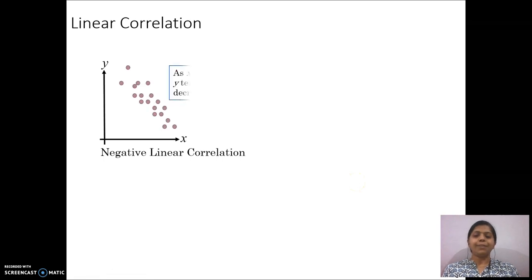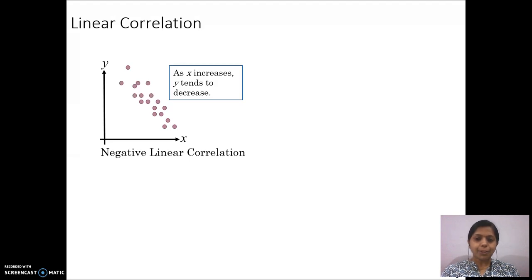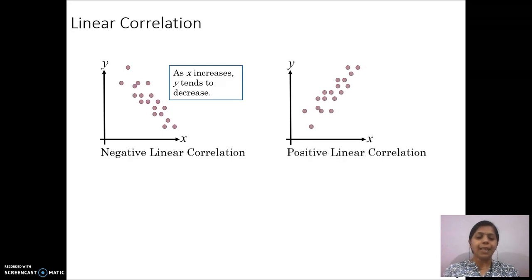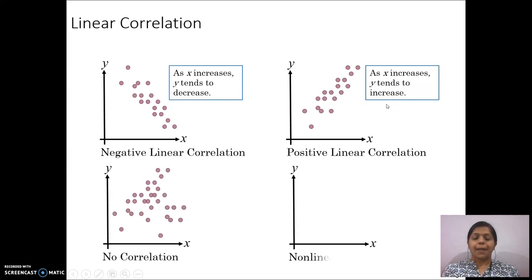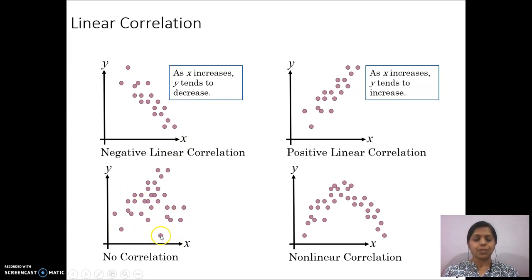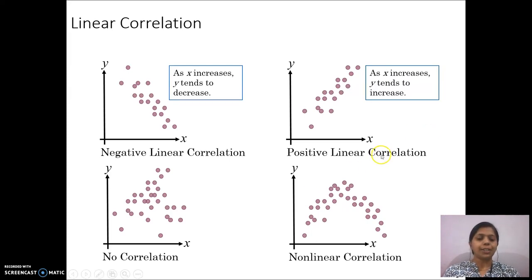There are different types of correlation. As X increases, the value of Y tends to decrease — this is called negative correlation. As X increases, the value of Y tends to increase — that is called positive correlation. When there is no relation between X and Y, it is called no correlation. When the values are not linearly correlated, it is called non-linear correlation.